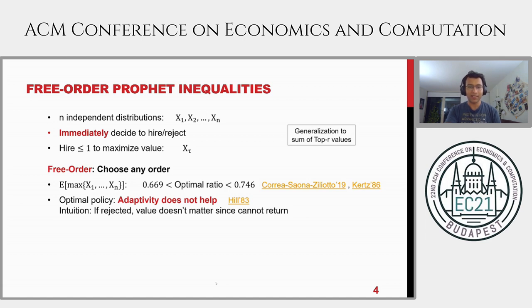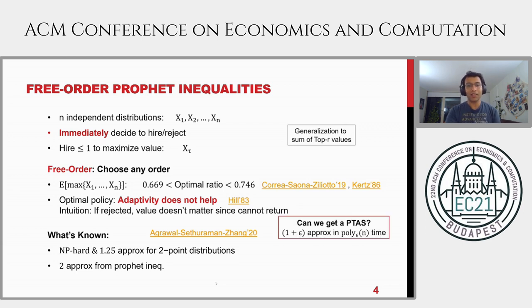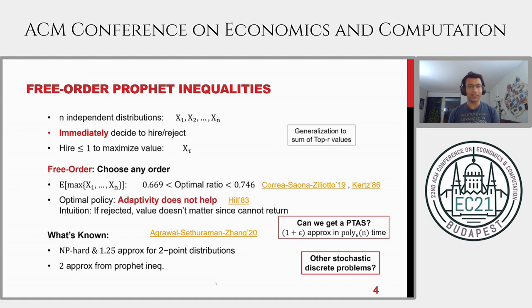Finding the optimal algorithm turns out to be NP-hard, so you cannot find it in polynomial time. However, for some simple distributions like two-point distributions, you can do better than a two-approximation. This raises the question: can we do better? Can we get a PTAS — a one-plus-epsilon approximation in polynomial time? One can ask the same question for other stochastic discrete optimization problems: can we hope to get a PTAS for such problems?